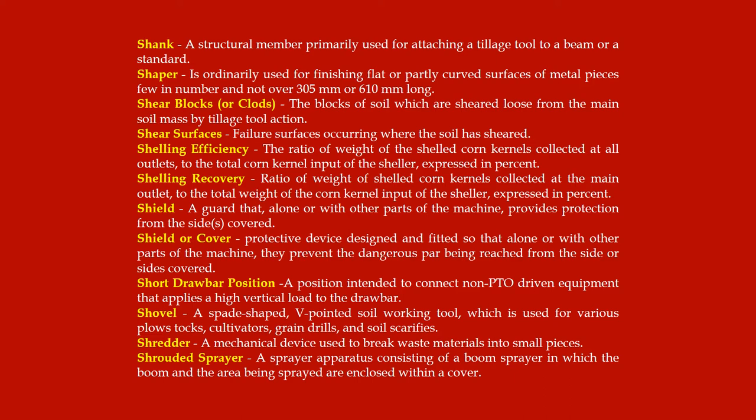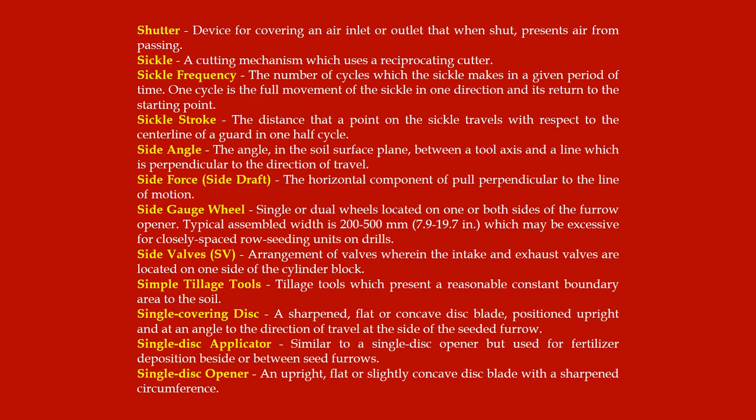Shredder: a mechanical device used to break waste materials into small pieces. Shrouded sprayer: a sprayer apparatus consisting of a boom sprayer in which the boom and the area being sprayed are enclosed within a cover. Shutter: a device for covering an air inlet or outlet that, when shut, prevents air from passing.